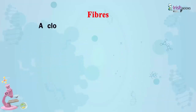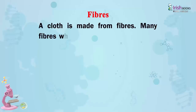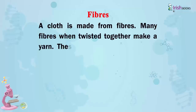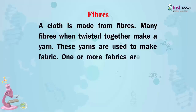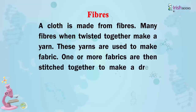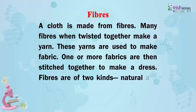Fibres: A cloth is made from fibres. Many fibres, when twisted together, make a yarn. These yarns are used to make fabric. One or more fabrics are then stitched together to make a dress. Fibres are of two kinds: natural and man-made.